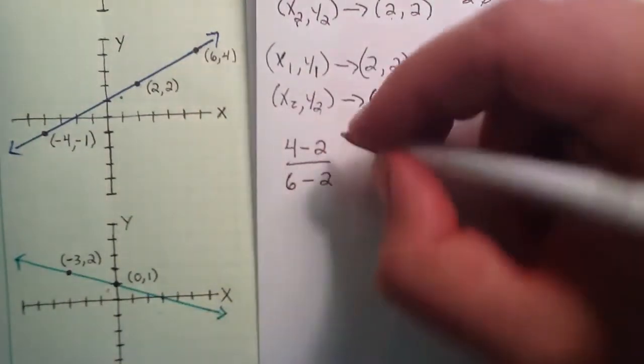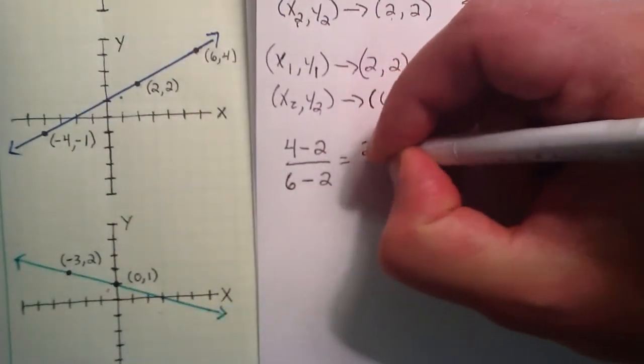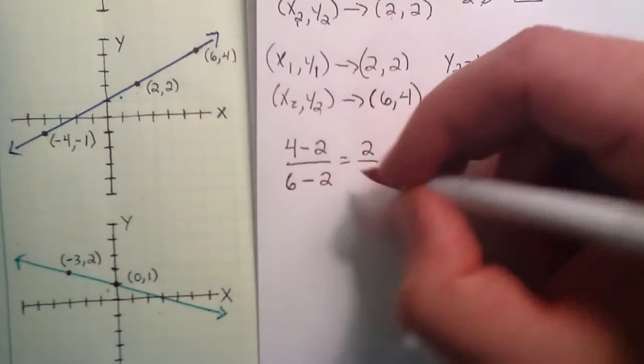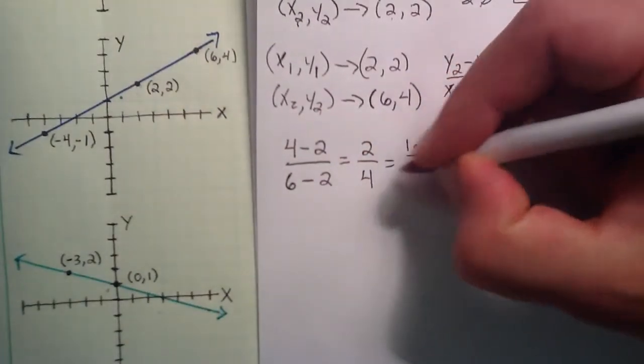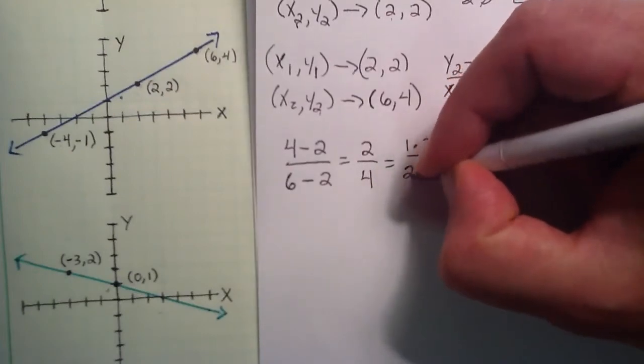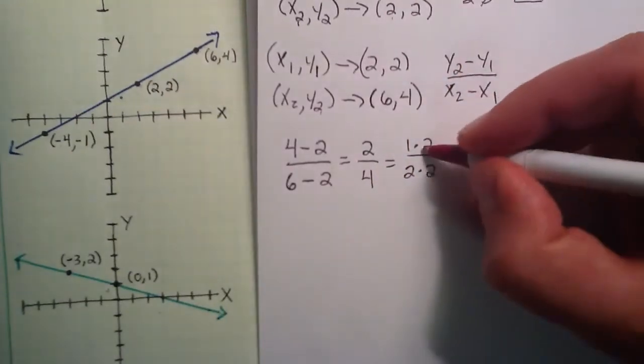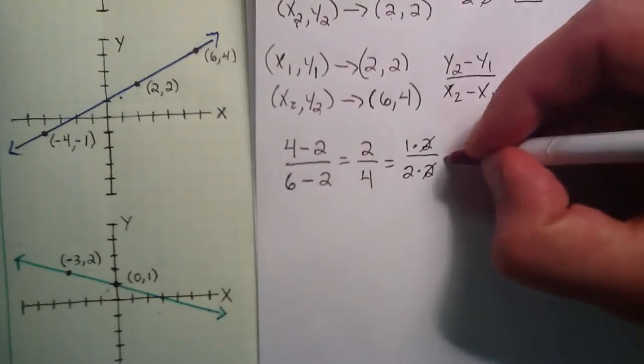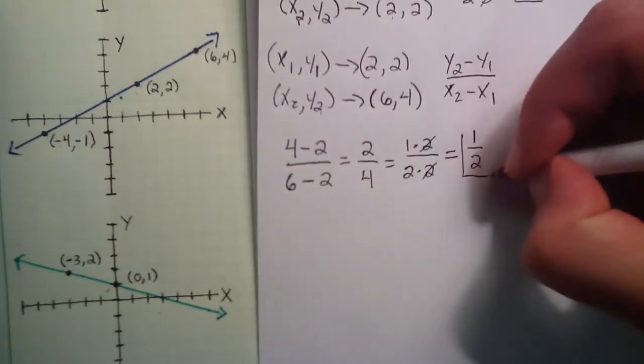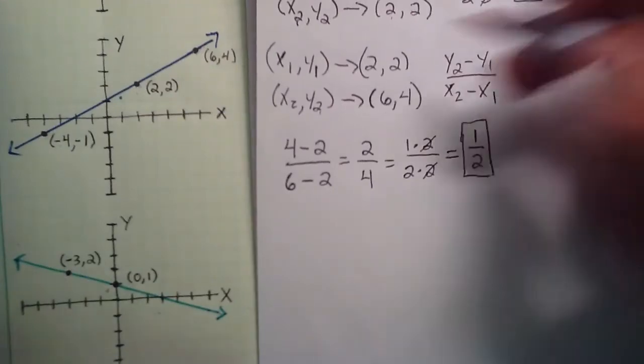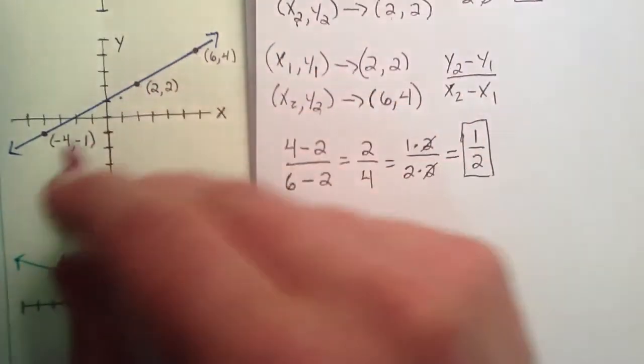So 4 minus 2 simply gives us 2, and 6 minus 2 gives us a 4. And 2 is equal to 1 times 2, and 4 is equal to 2 times 2. This 2 will cancel with that 2, giving us the same result of 1 half being the slope of this line.